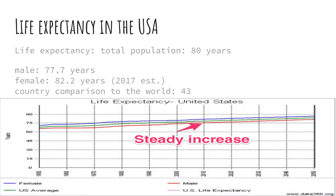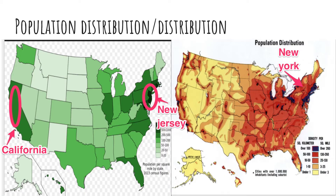Here are two images of the population density and distribution among the United States. Most of the population is either in California or New Jersey. A survey asked on Quora.com, where random people can answer, explored why so many people want to live in California, and it was said multiple times that it was because of nature, education, and attractions.